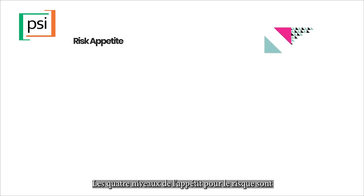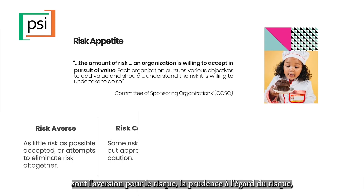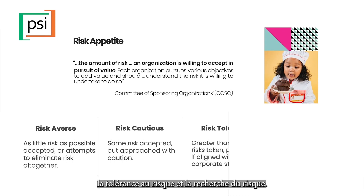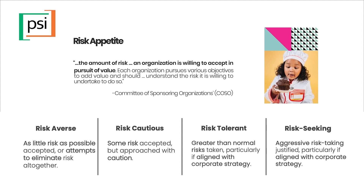Our four levels of risk appetite are: risk-averse, risk-cautious, risk-tolerant, and risk-seeking.